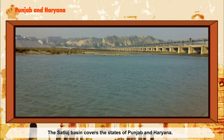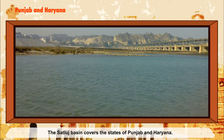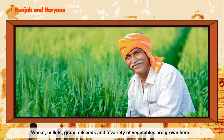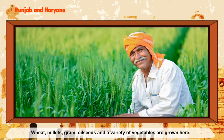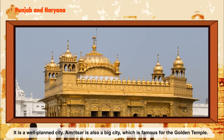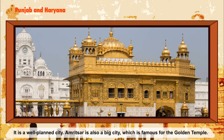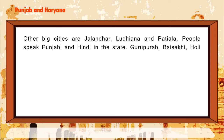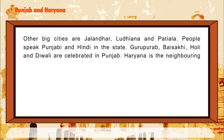Punjab and Haryana: The Sutlej Basin covers the states of Punjab and Haryana. Chandigarh is the capital of Punjab. Farming is the main occupation; wheat, millets, gram, oilseeds, and a variety of vegetables are grown here. Amritsar is also a big city, famous for the Golden Temple. Other big cities are Jalandhar, Ludhiana, and Patiala. People speak Punjabi and Hindi. Gurpurab, Baisakhi, Holi, and Diwali are celebrated in Punjab.